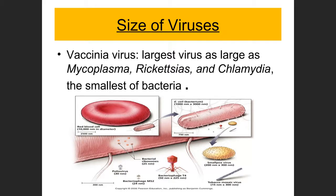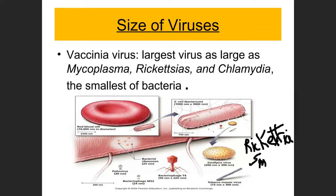Large viruses like smallpox and tobacco mosaic virus are about 300 nanometers — as large as the smallest bacteria, such as Rickettsia and Chlamydia. Rickettsia, one of the smallest bacteria, is also an intracellular parasite, just like viruses. The idea is that once an organism is this small, with such limited genetic material, there isn't enough room for all the genes needed for an independent life, so it must be a parasite.